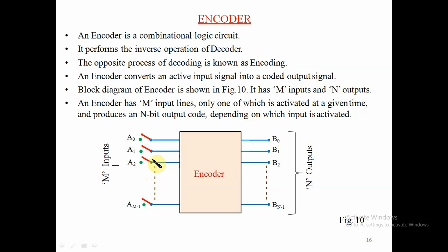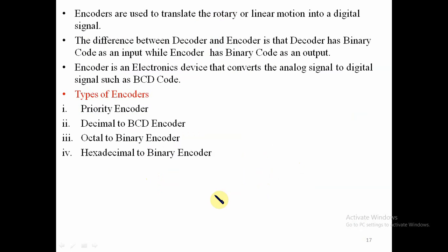The encoder has M input lines, only one of which is activated at a given time, and it produces an output code depending on which input is activated. It is also used to translate rotary or linear motions into digital signals. The main difference between a decoder and an encoder is that a decoder has a binary code as its input, while an encoder has a binary code as its output.